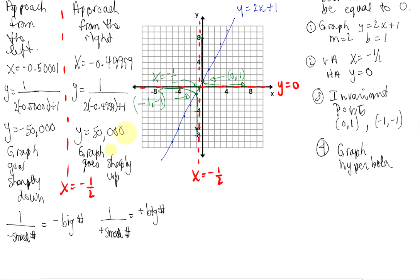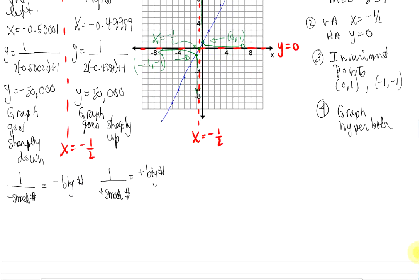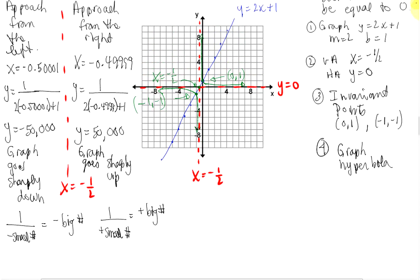As x becomes a large positive number, you can see the graph gets closer and closer to the x-axis, and y becomes very, very small. And on the left side, as x becomes a large negative number, y gets closer and closer to 0, but it will never actually touch the x-axis where y equals 0.